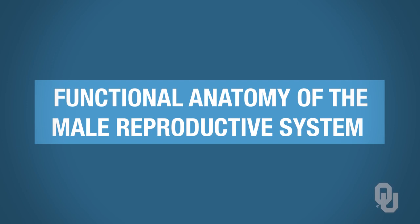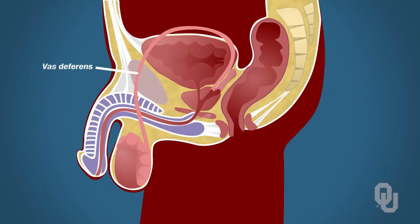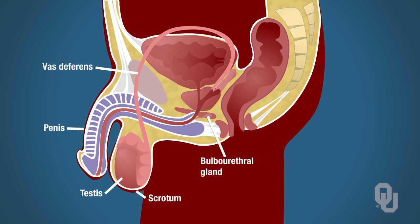Let's begin by simply identifying structures that are important in the male reproductive system. These include the vas deferens, also called the ductus deferens, the penis, the testes, the scrotum, the bulbourethral gland, the prostate gland, and finally the seminal vesicle.